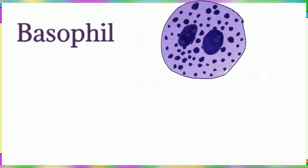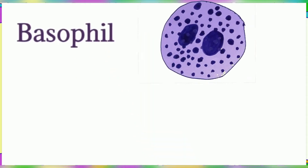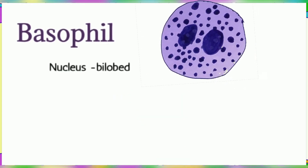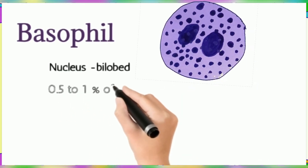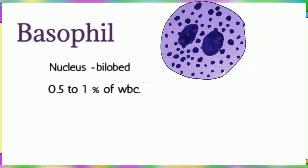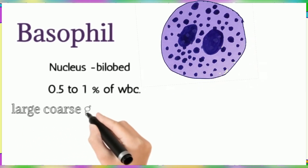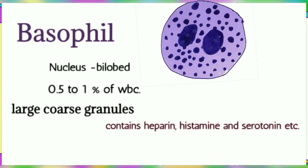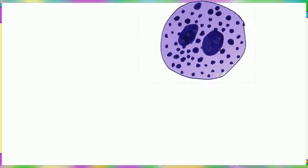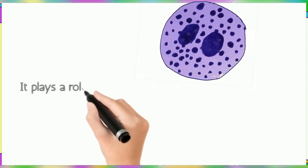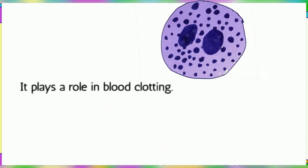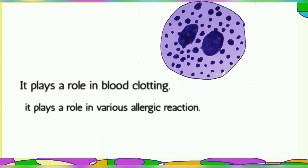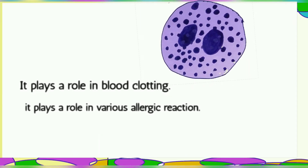Basophils are the least common white blood cells, making up only 0.5 to 1% of WBCs. Their nucleus is bilobulated and the cytoplasm contains large, coarse granules. The granules contain heparin, histamine, serotonin, and other enzymes. Basophils contain the enzyme heparin, so they play a vital role in blood clotting. They are also involved in parasitic infections and allergic reactions.